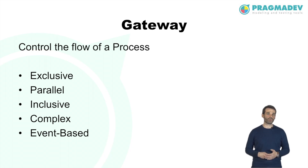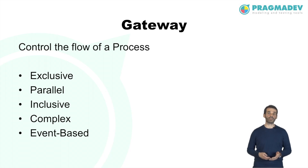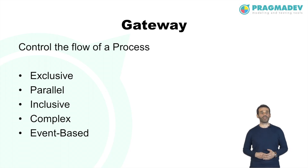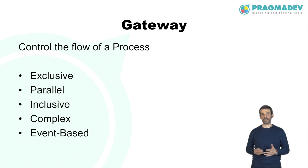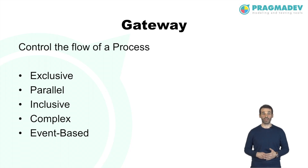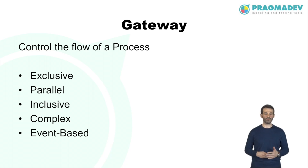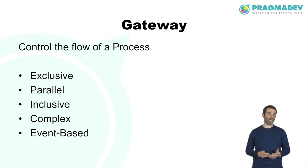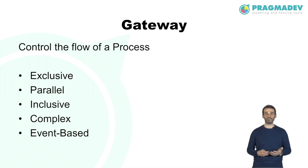Gateways are used to control the flow of a process. The term gateway implies a gating mechanism that either allows or denies passage through the gateway. It controls the flow of both diverging and converging sequence flows, meaning it can have multiple input and multiple output flows. The types of gateways are: exclusive, parallel, inclusive, complex, and event-based.